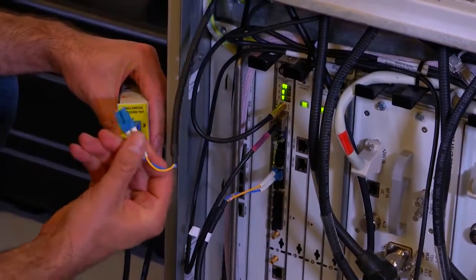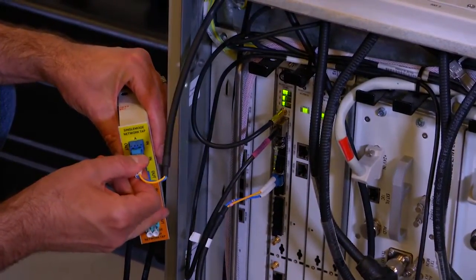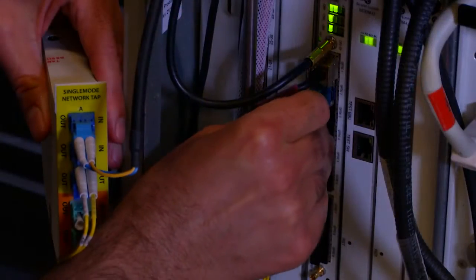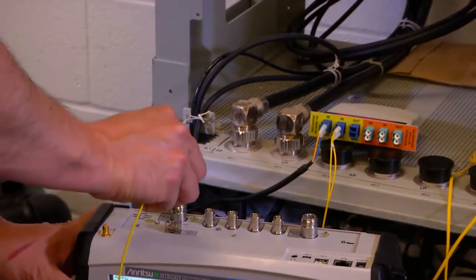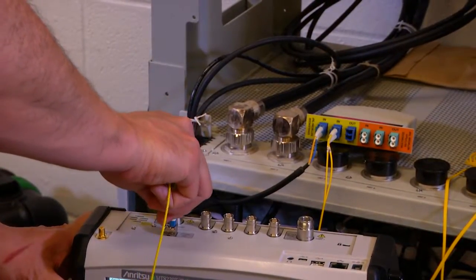For measurements on a CPRI link, the fiber connection is temporarily broken to insert an optical tap. The tap port then goes to the SFP in the BTS Master option slot.